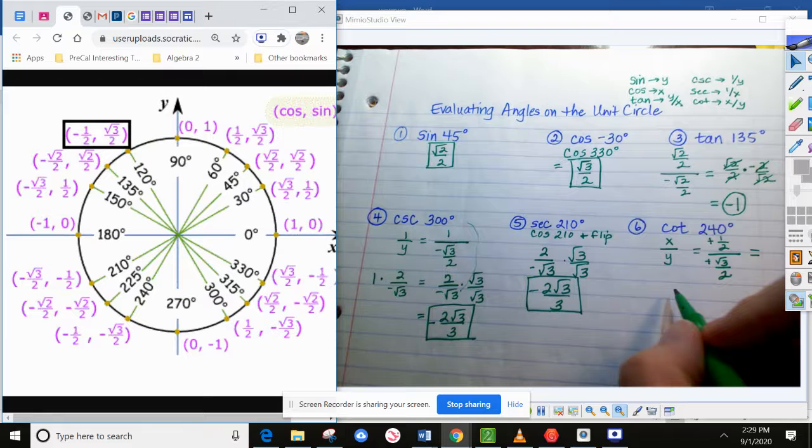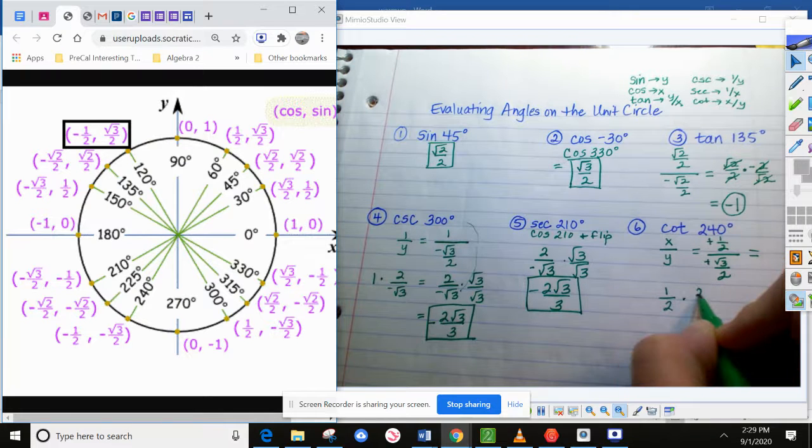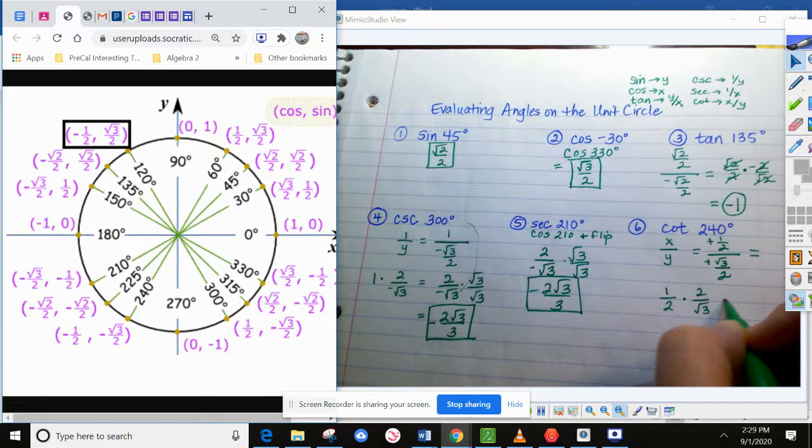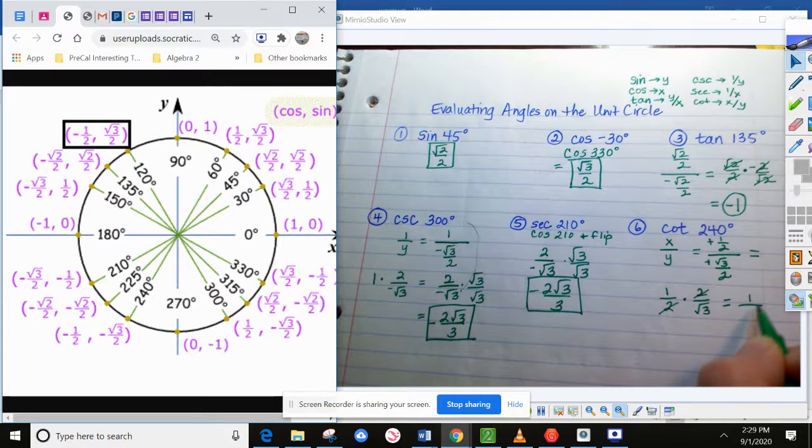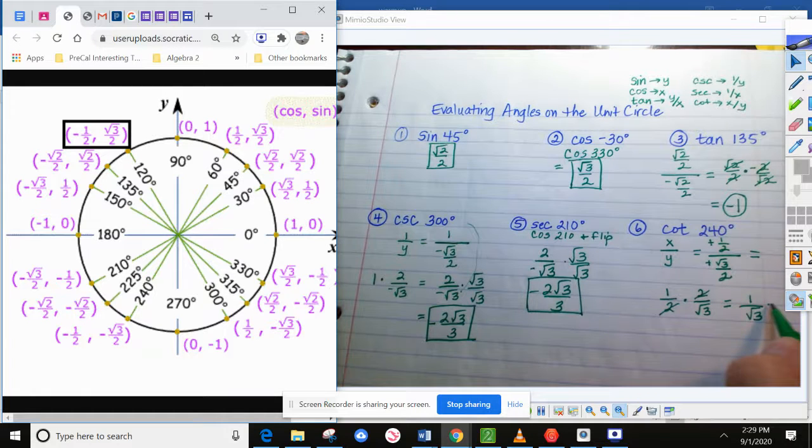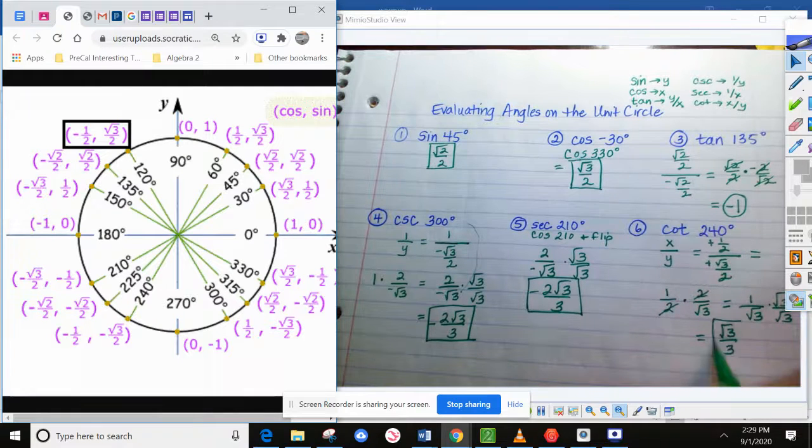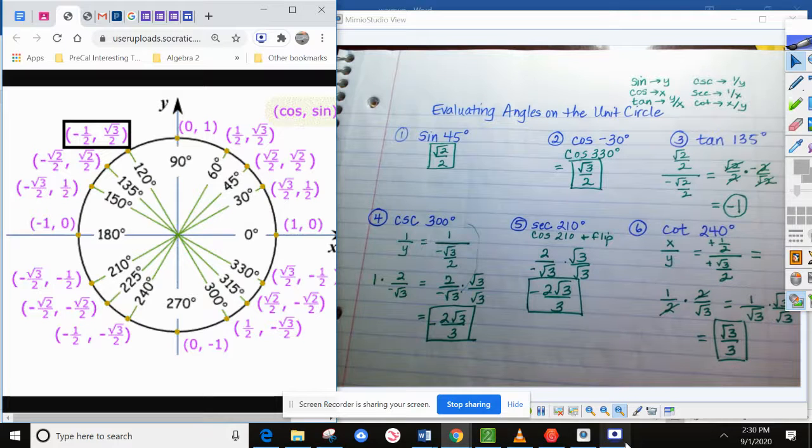So keep, change, flip. And now simplify. You're going to be able to cross out these 2's. And we're left with 1 over the square root of 3. Then rationalize that. And we're left with square root of 3 over 3. I hope this helps. If you need any more help, let me know.